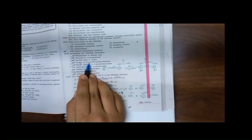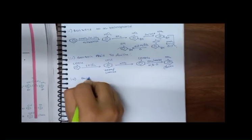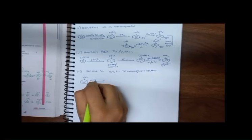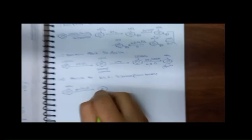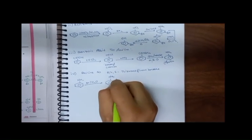The fourth reaction: convert Aniline to 2,4,6-tribromofluorobenzene. First take Aniline and treat with Br2/H2O. This gives us 2,4,6-tribromoaniline — Bromine attaches at the 2, 4, and 6 positions.